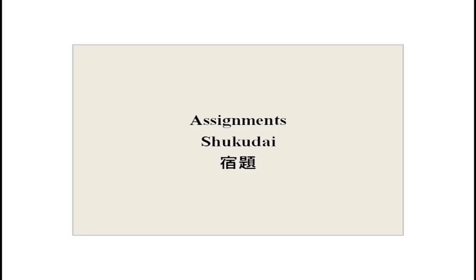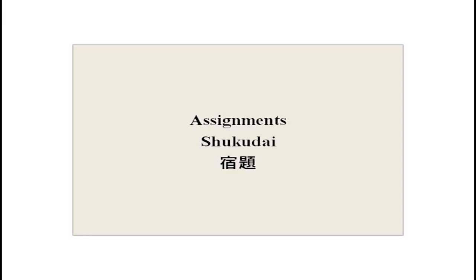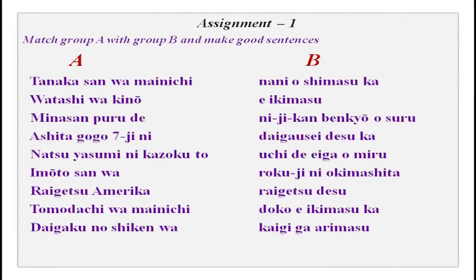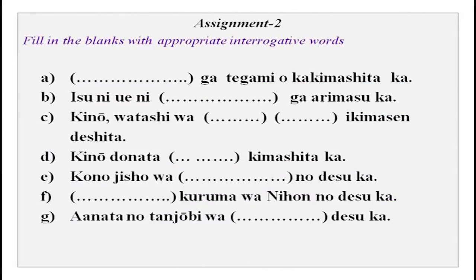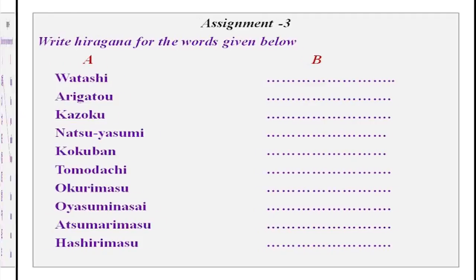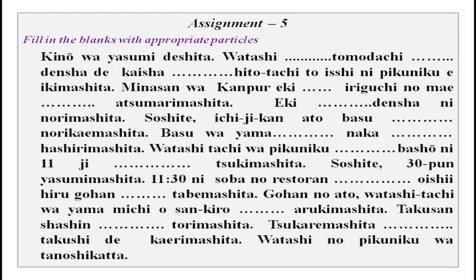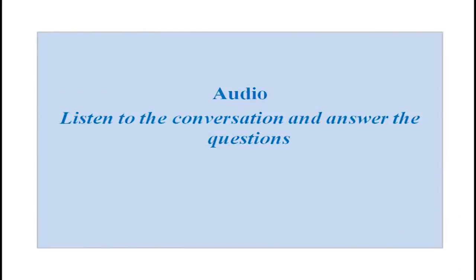Now it is your time — you can start your assignments. Match group A with group B and make good sentences. Fill in the blanks with question words. Write hiragana for the words given. Match the kanji with meanings in group B. Practice particles and fill in the blanks. There is also an audio exercise where you need to listen and answer the questions given.